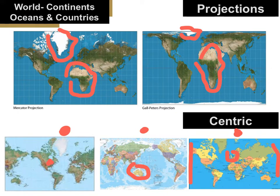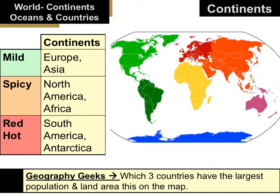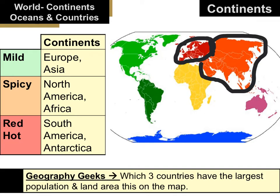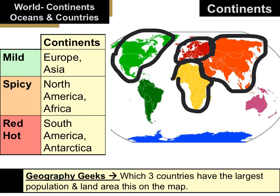There are seven continents in the world. A continent is just a landmass, and generally the islands closer to a landmass are grouped in with that continent. We have Europe — generally separated from the rest of Asia by the Ural Mountains (U-R-A-L). Part of Russia is in Europe and part is in Asia, and the Ural Mountains form that separation. We then have Asia, by far the largest continent, followed by North America, Africa, and South America.